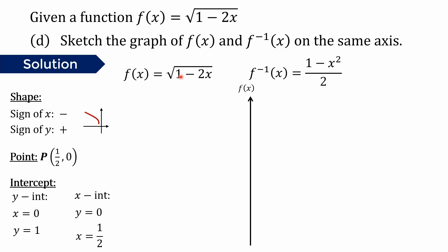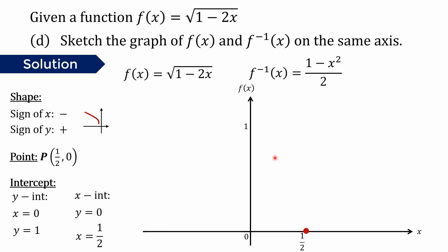Now we have all the information needed to sketch the graph. We draw the y-axis and x-axis, place point P at (1/2, 0), and mark the y-intercept at (0, 1). The graph starts at point P, curves through the y-intercept at 1. This is the graph of f(x). To sketch f-inverse, we reflect the graph on the line y equals x, so what is on the x-axis becomes on the y-axis and vice versa.